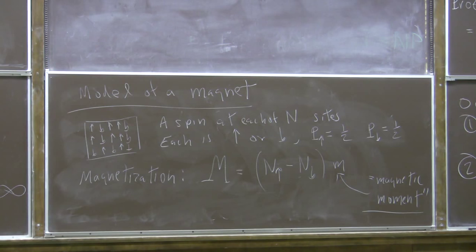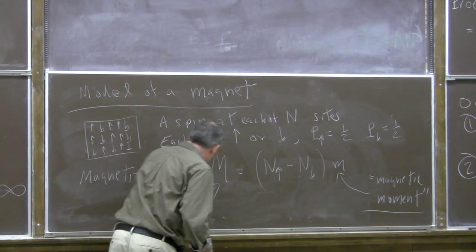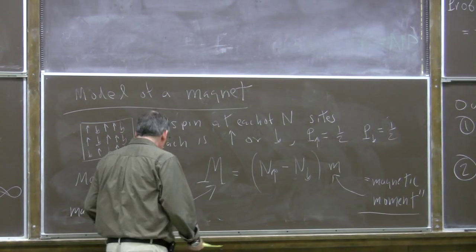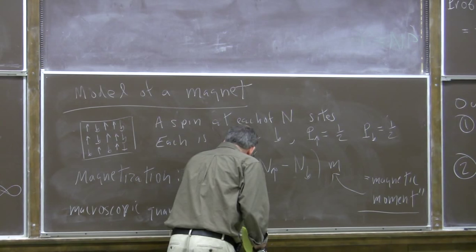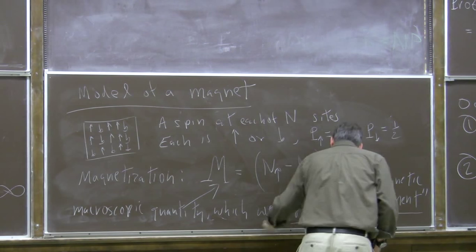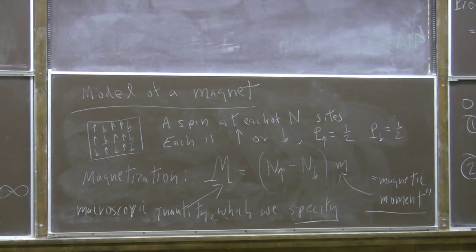But there might just by chance be an excess of either up over down or down over up, and as a result there will be some non-zero magnetization for the bulk magnetic material — some big hunk of magnet with Avogadro's number of spins in it. The magnetization is the macroscopic quantity that we're going to fix, and somebody can come along and measure it with a magnetometer.